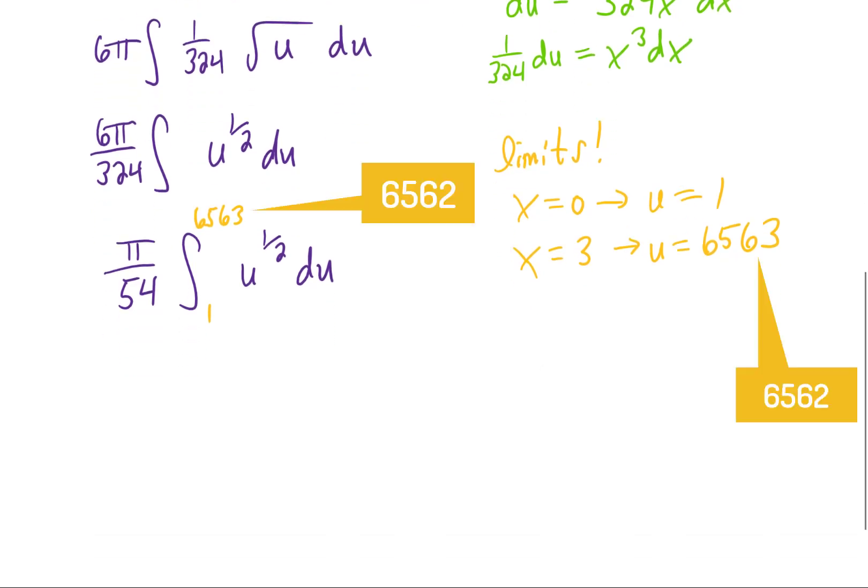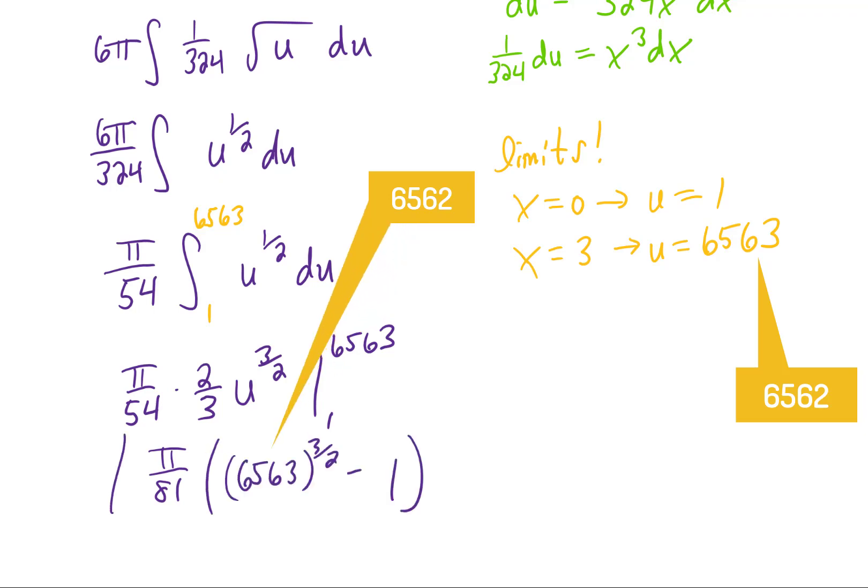Now let's actually integrate. That means raising the power from 1/2 to 3/2. Dividing by 3/2 is the same as multiplying by 2/3. Canceling the 2 with the 54 gives us 27 in the denominator. Multiplying 27 times 3 gives us 81 in the denominator. Then plugging in our upper and lower limits of integration gives us the final answer we're looking for.